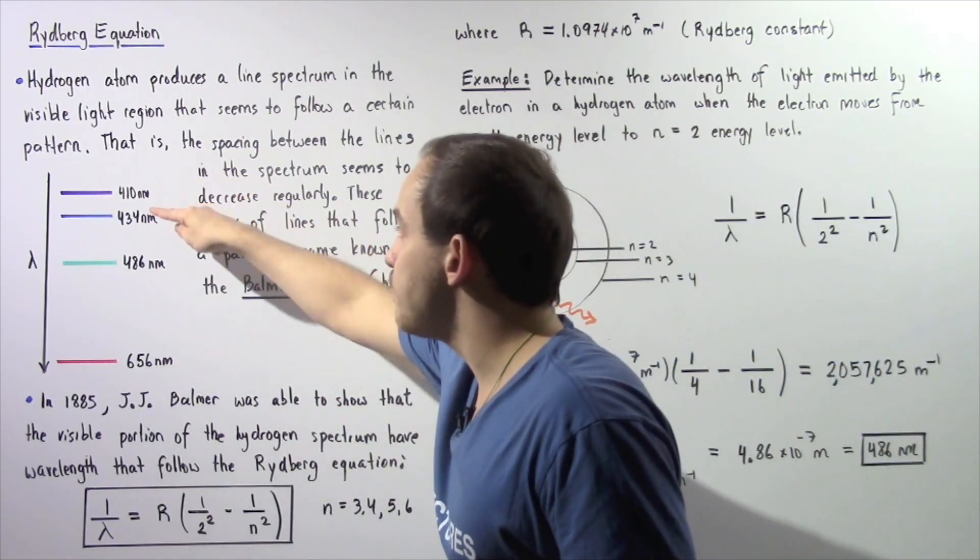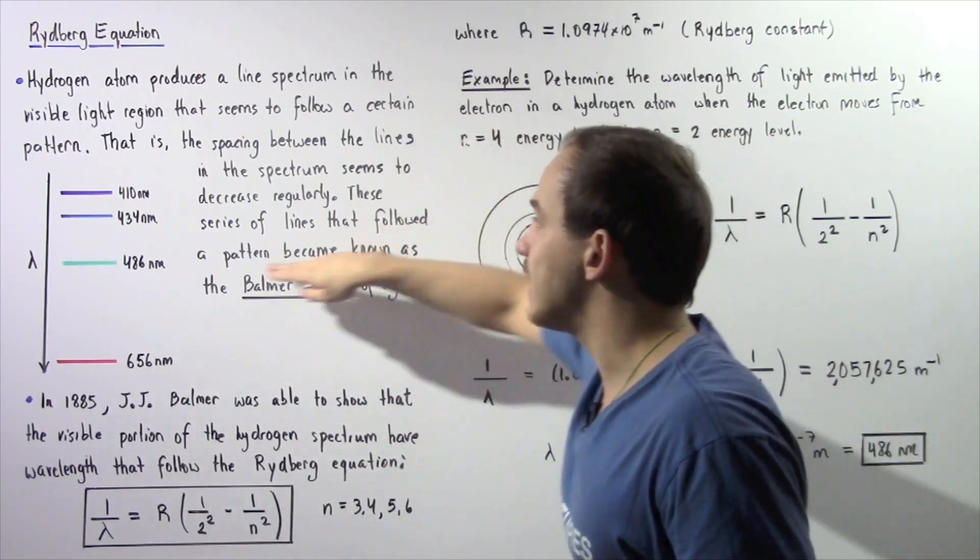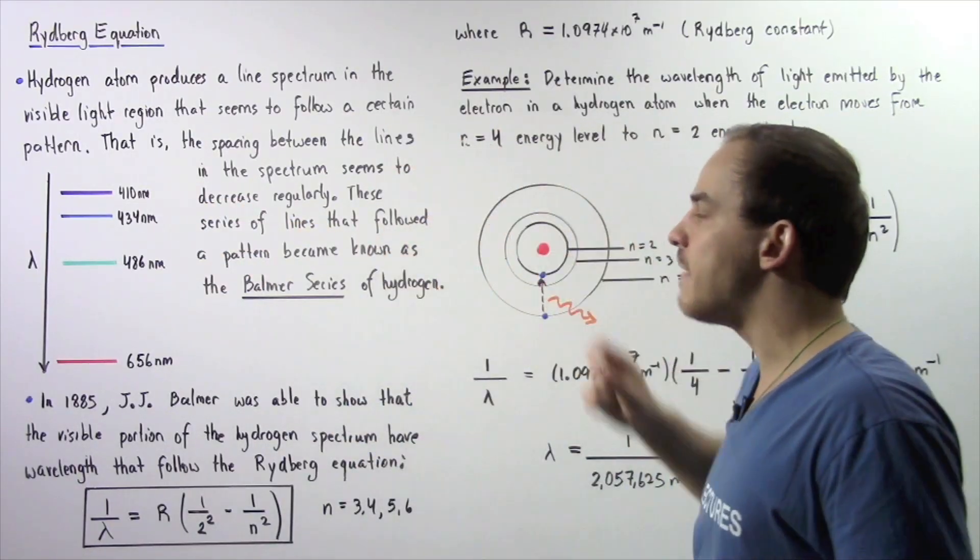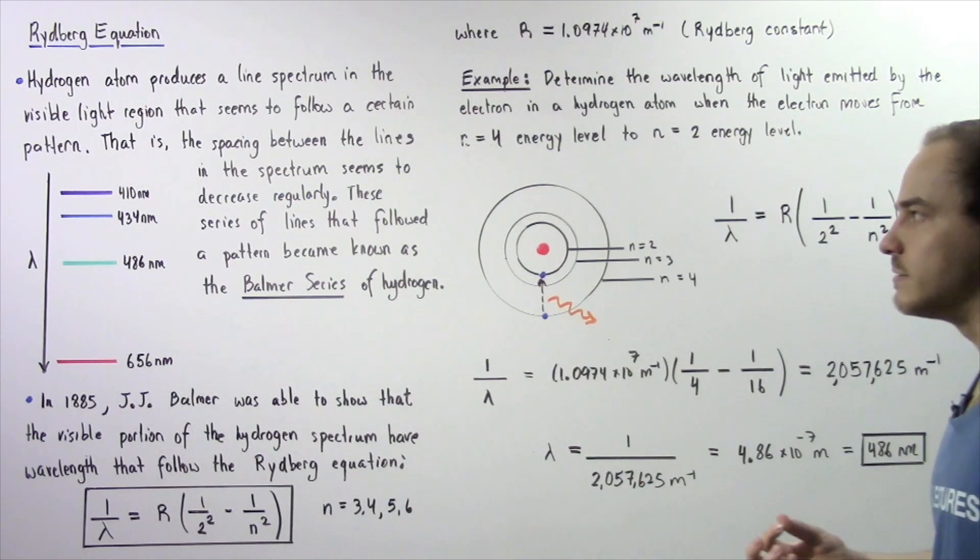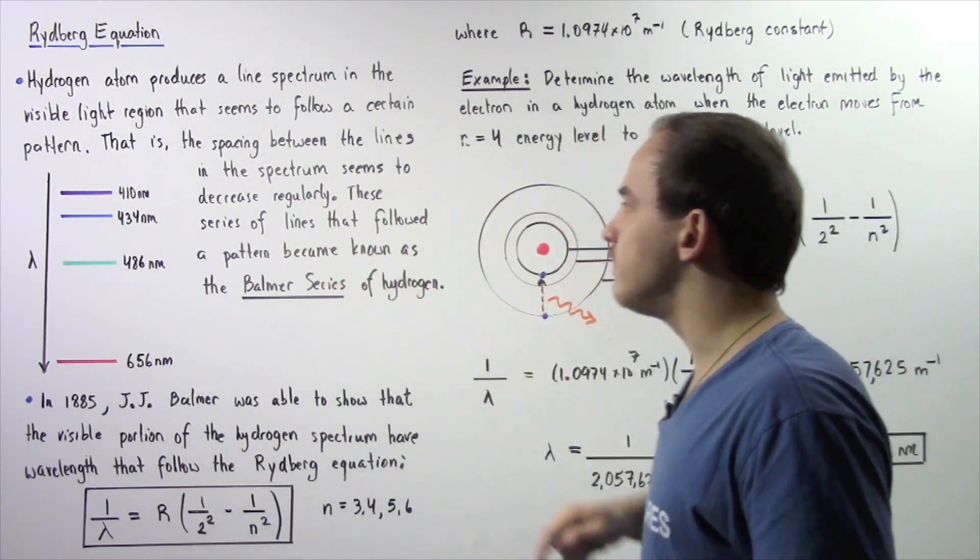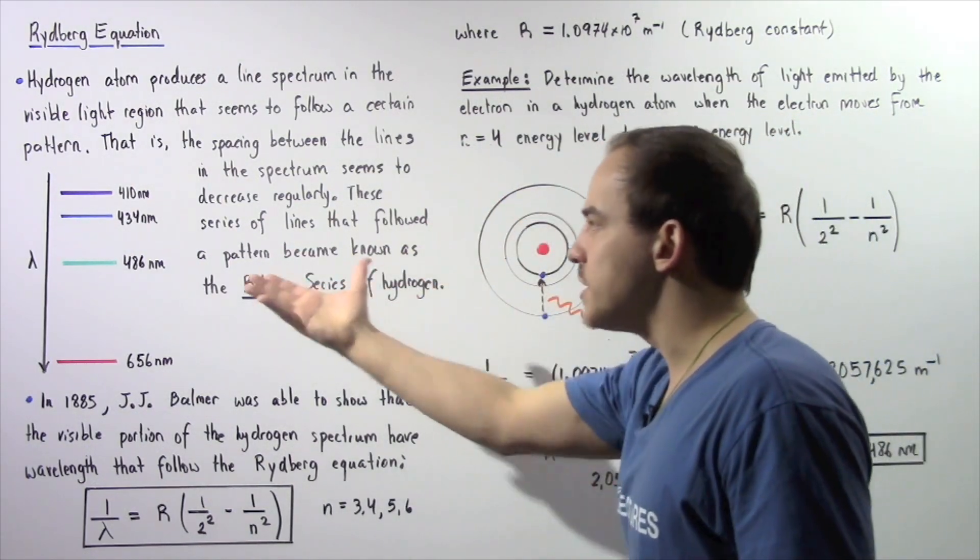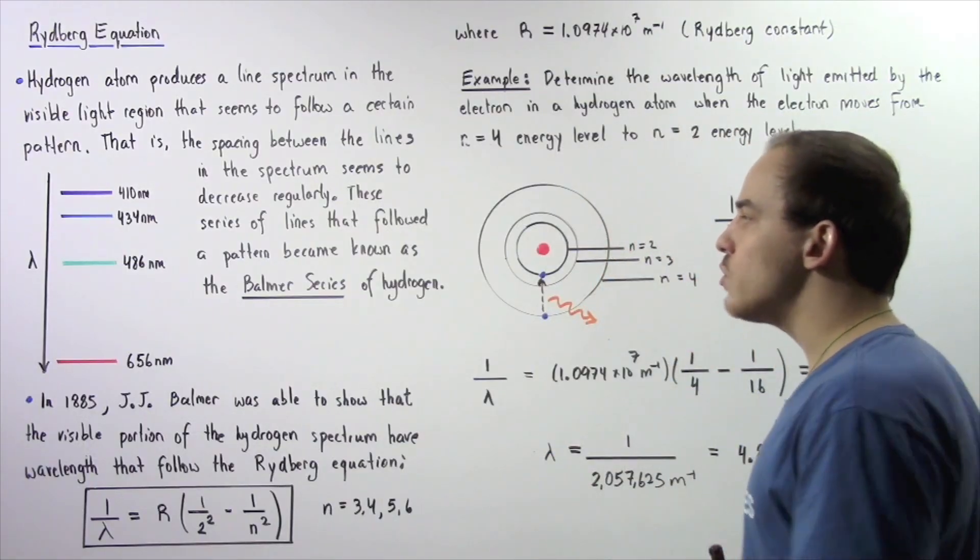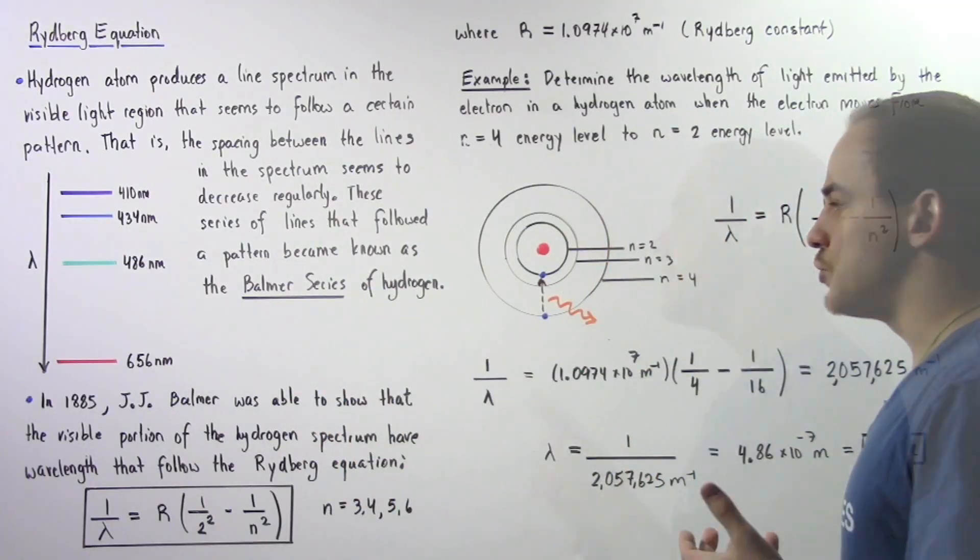Now notice that the spacing in between the lines on this spectrum seem to follow some type of regular pattern. Now these series of lines that follow this pattern became known as the Balmer series of hydrogen.